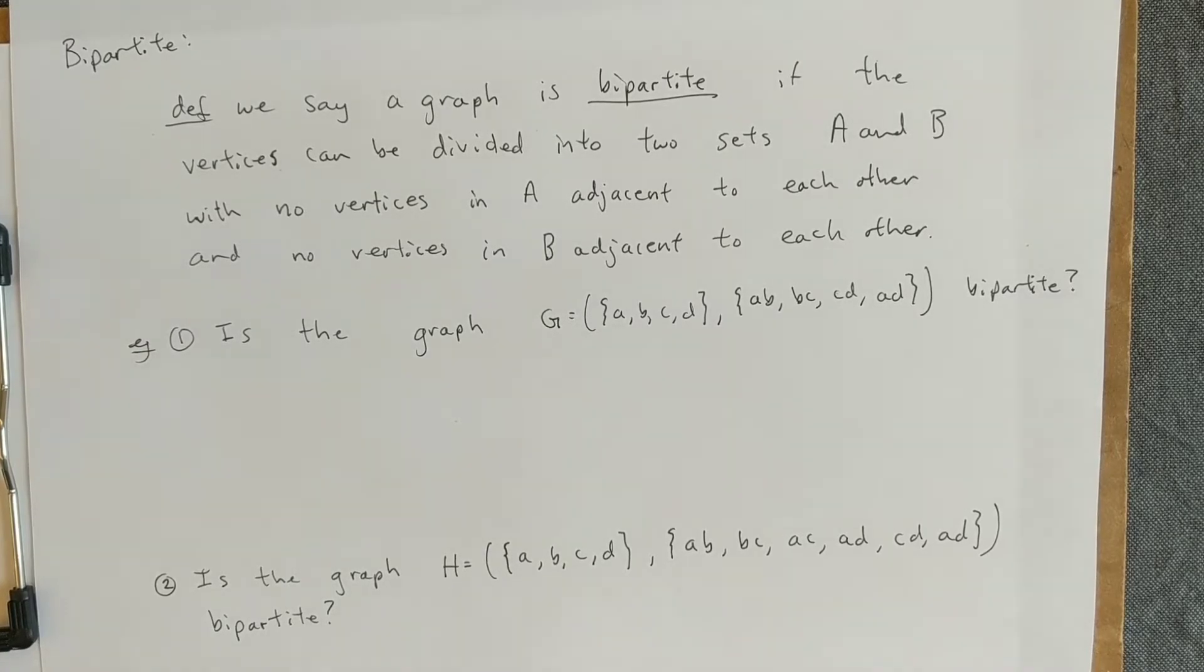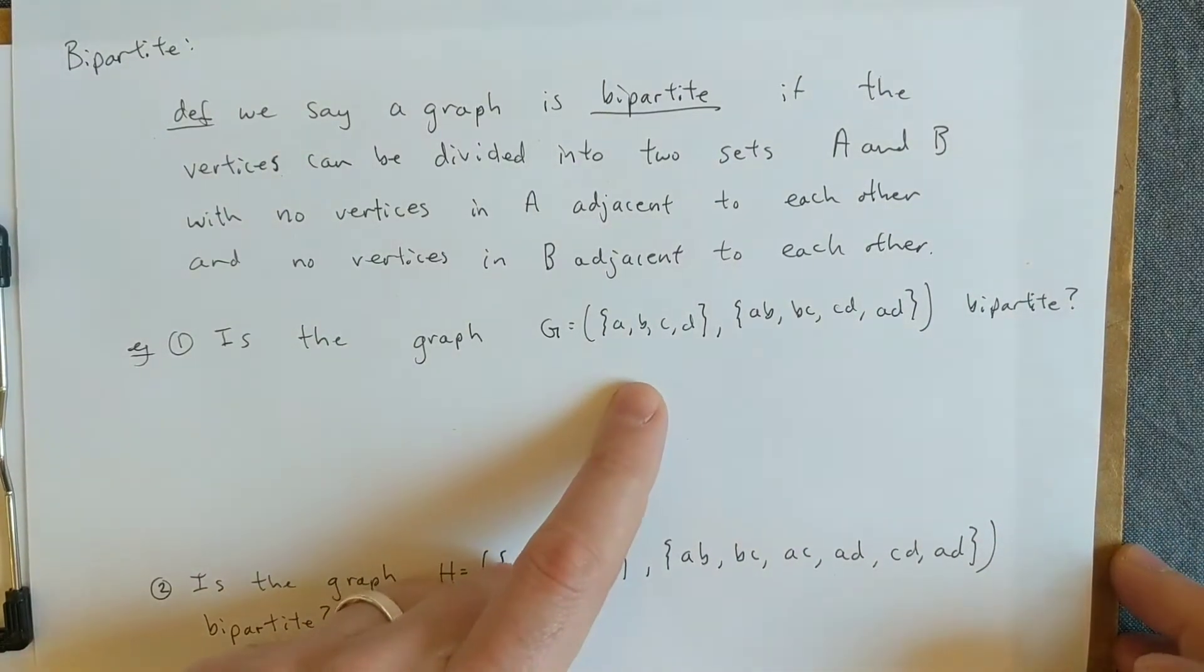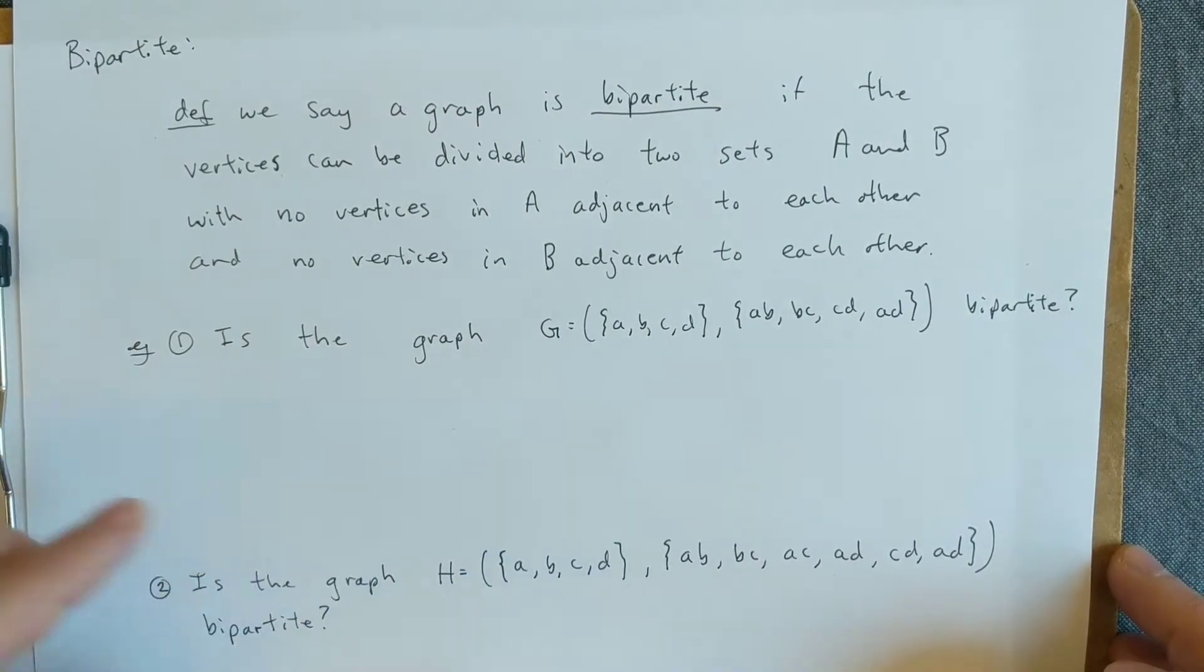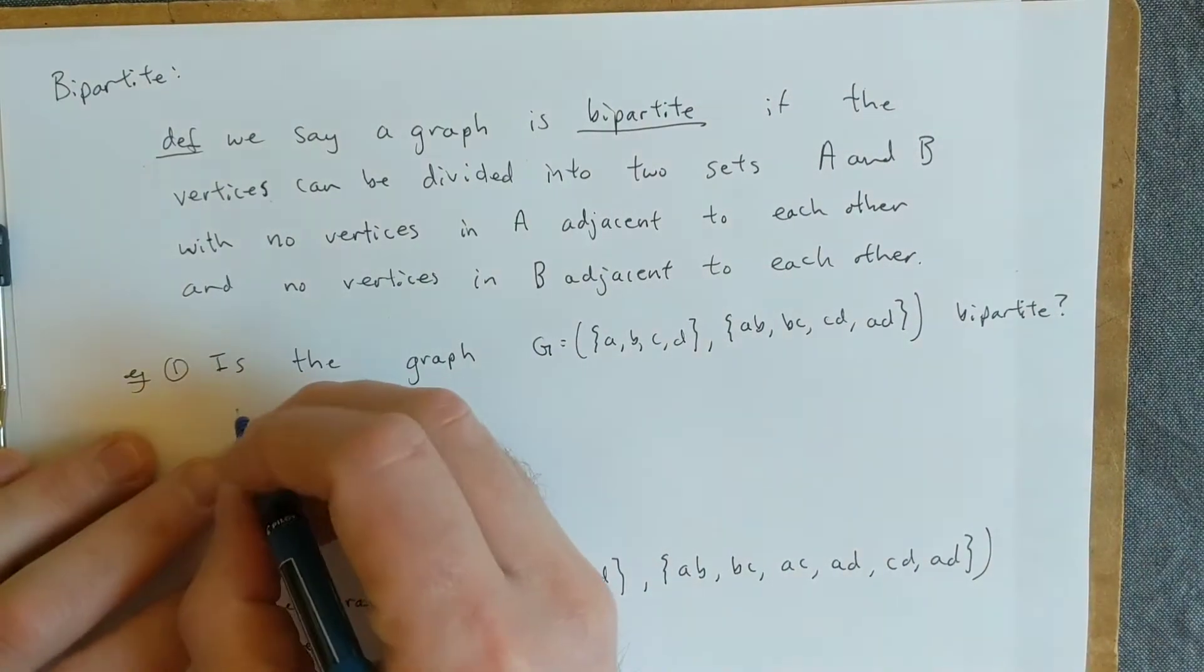The only connections can be between A and B, none within A or within B. So let's look at a couple of graphs here and see if we can make this happen. The easiest way to do this, I think, is to draw a representation that identifies it as bipartite. So let's first draw a representation of G here.